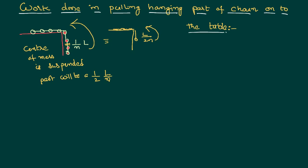That work done will be stored in the format of potential energy itself. Therefore how much is that work done? We can write work done equal to nothing but the potential energy of the suspended part of the chain. We know the formula for the potential energy as mgh.